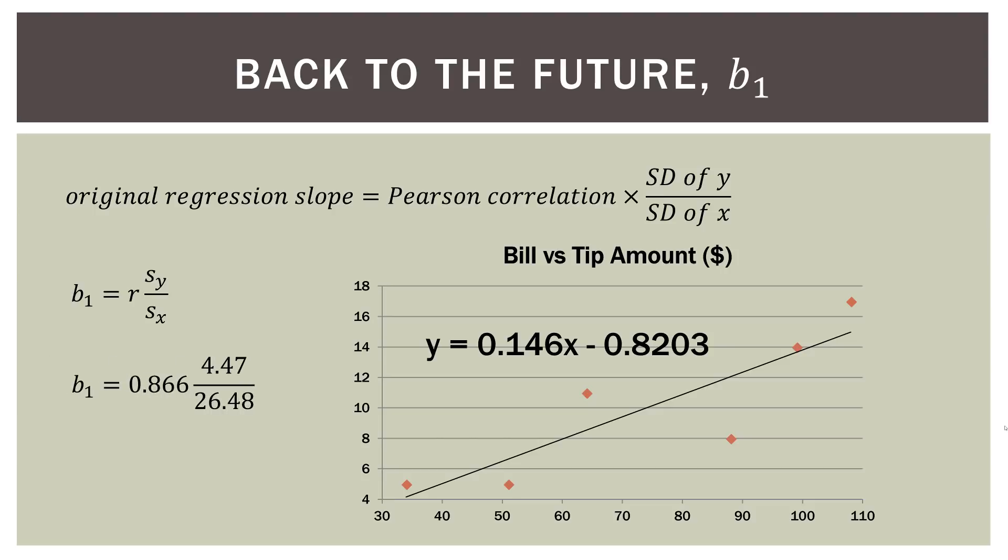Put in the numbers. Remember that the correlation is 0.866. The standard deviation for y, the tip amount, is 4.47, divided by the deviation of the bill amount, which is 26.48. And again, those are actually in dollars. Go ahead and do that math, and what do we get? We get the actual slope of the regression equation, which is 0.146. Now, of course, because of the miracles of algebra, we can also do something else.